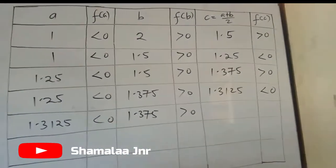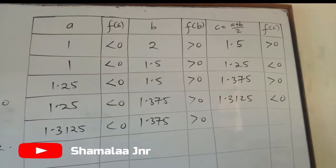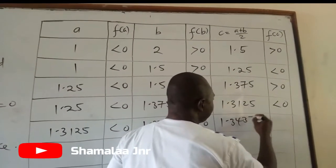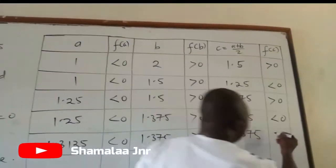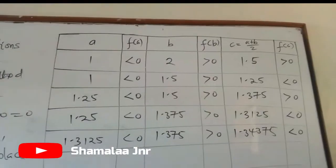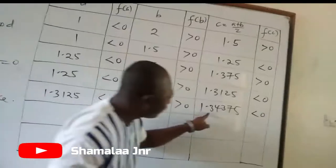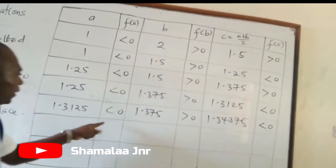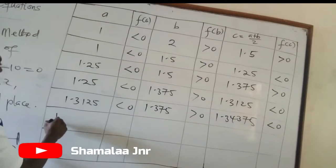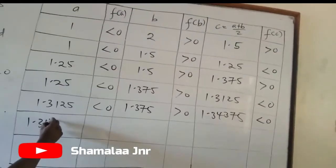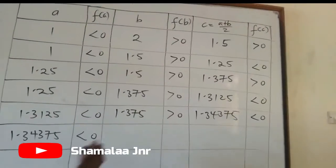You find the average of these two values and write it at C. When you do that, you get 1.34375. Then again you find the functional value of 1.34375, which is less than 0. Because its functional value is less than 0, it replaces the previous A value, which was also less than 0.